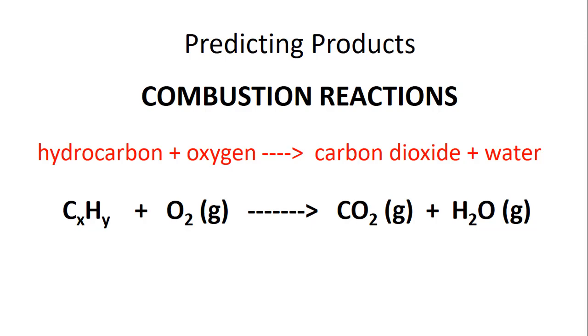On the product side, we always see the same two products, carbon dioxide and water. You will notice that both of these products are in the gaseous state. That is because combustion reactions are exothermic. They release a lot of heat, meaning the carbon dioxide and water are produced as gases due to the high temperatures. If you take a look at the hydrocarbon and you see the subscripts X and Y, just to clarify that for a moment, let's look at a few examples of hydrocarbons.